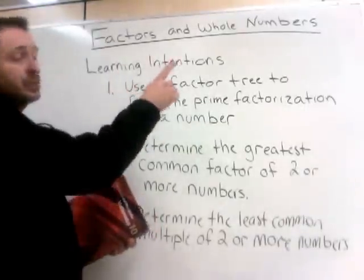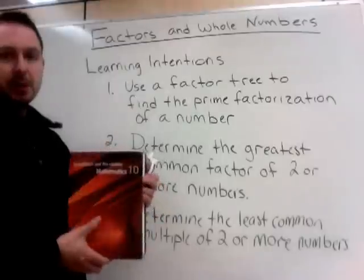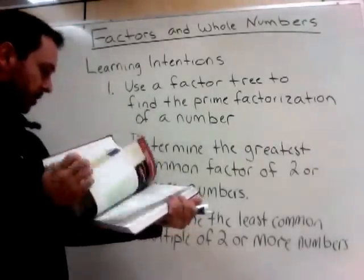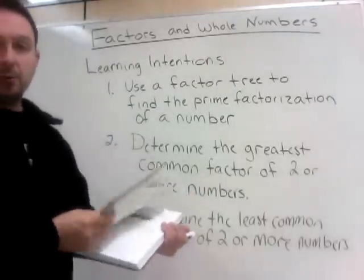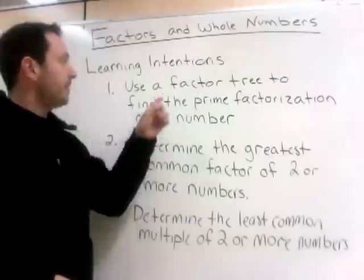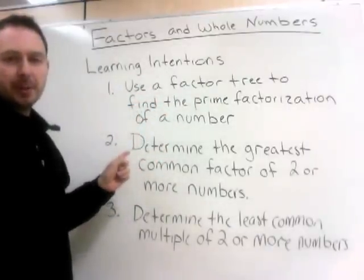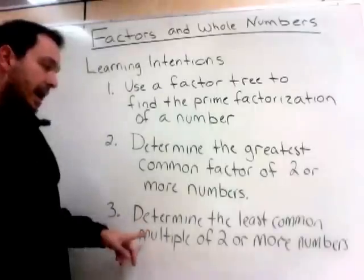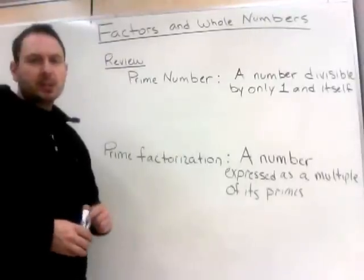Today we're working on factors and whole numbers. If you're following along in your textbook, this is section 3.1, which begins on page 134. The learning intentions today are to use a factor tree to find the prime factorization of a number, to determine the greatest common factor of two or more numbers, and to determine the least common multiple of two or more numbers.